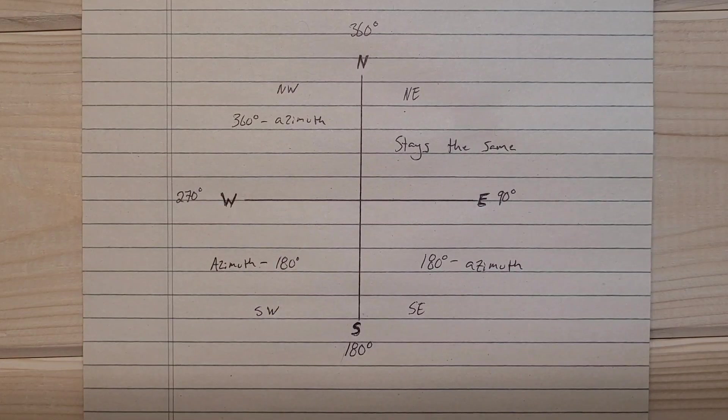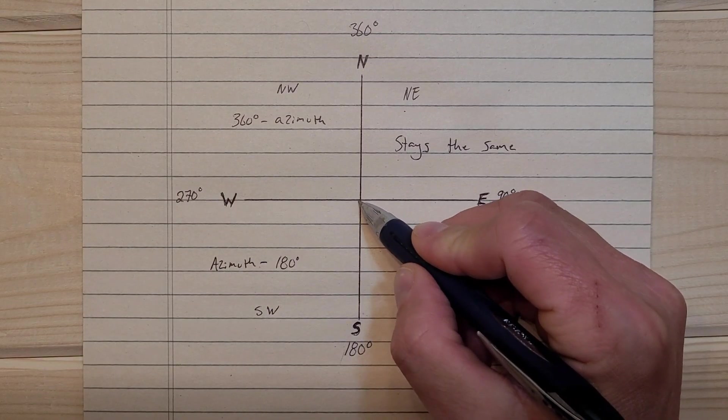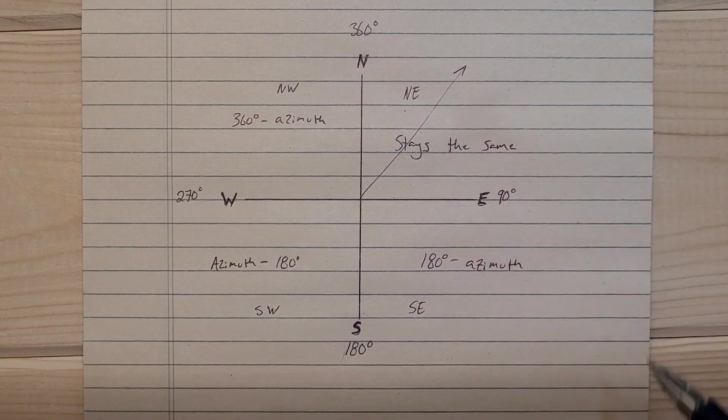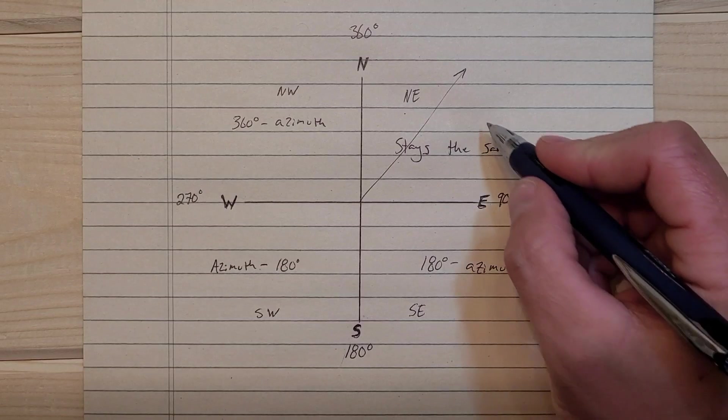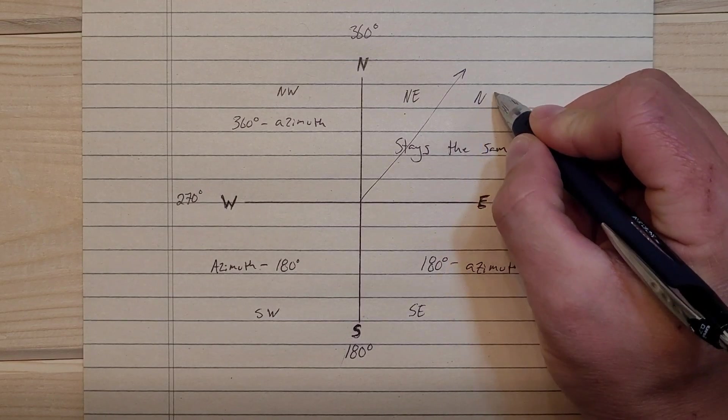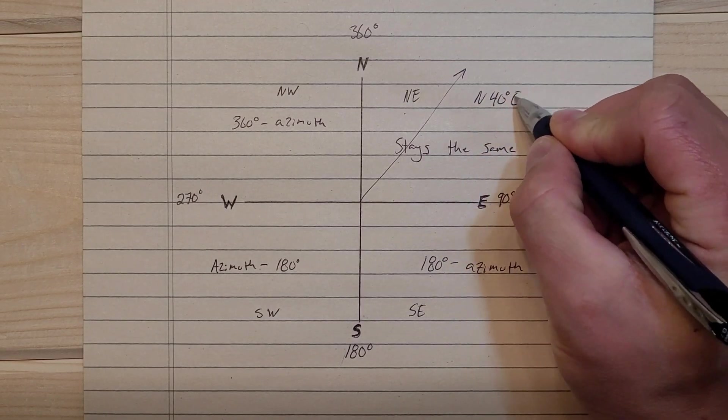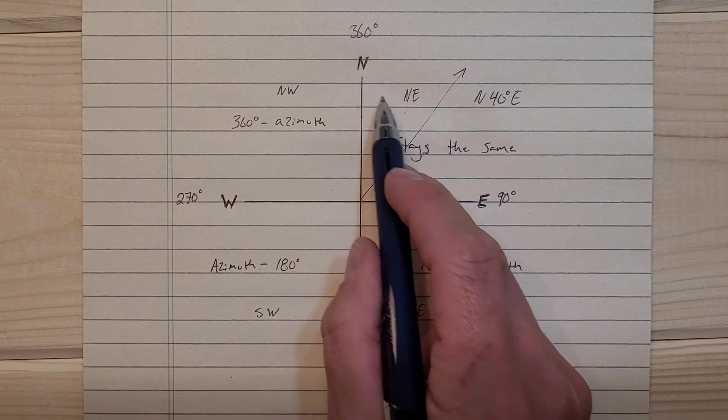So let's say you're given an azimuth of like 40 degrees, something like that. All you're going to say is north 40 degrees east, since it falls within this quadrant right here.